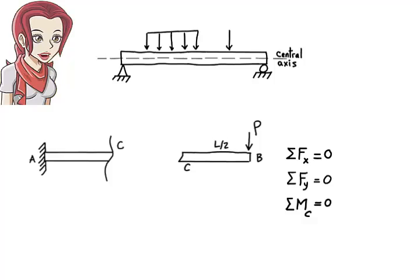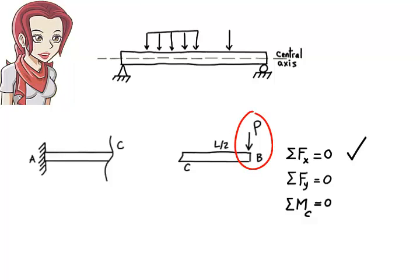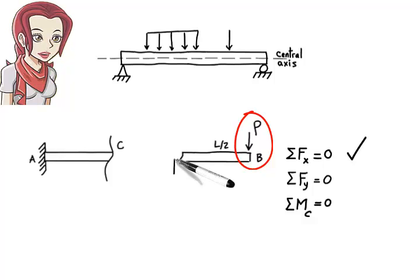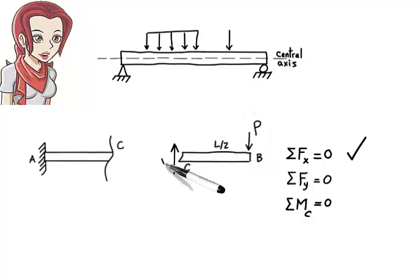The first equation is automatically satisfied, since there are no applied loads in the x direction. But how do we satisfy the second and third equations? A downward force P is applied to the right end of the segment. To satisfy the second equation, there must be an upward force at point C, equal in magnitude to P, in order for the sum of the forces in the y direction to be zero. This upward force, labelled V on the diagram, is called the shear force. It is one of the internal forces in the beam.